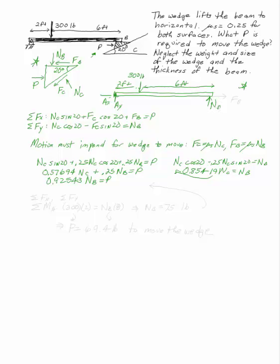So these two places have to be equal and opposite. NB goes down on the wedge, goes up on the beam. FB goes to the left on the wedge, goes to the right on the beam. That's my free body diagram.